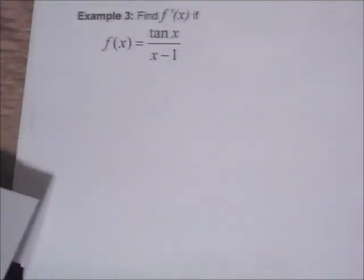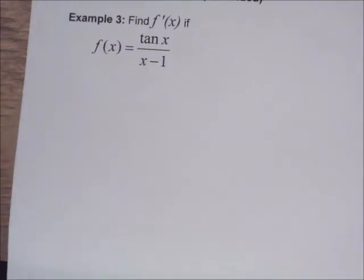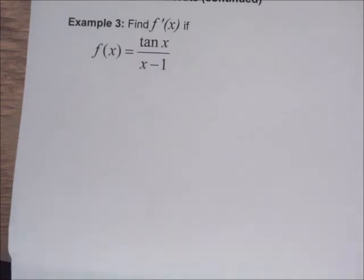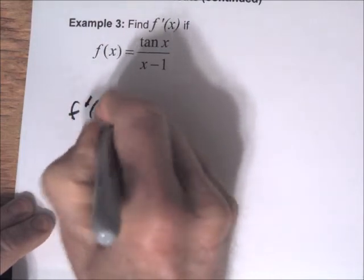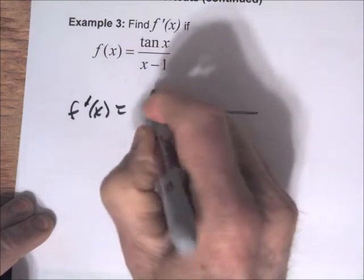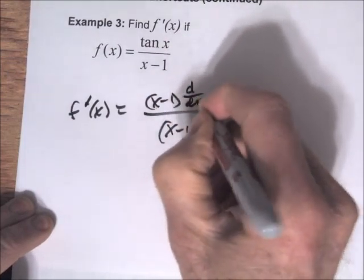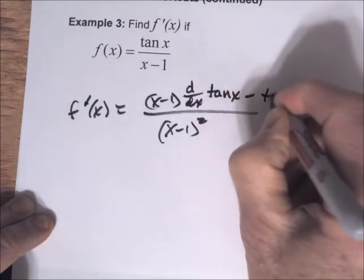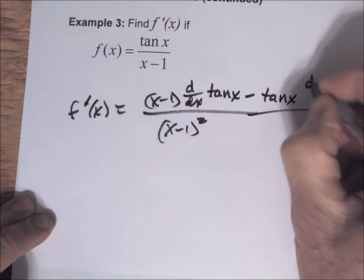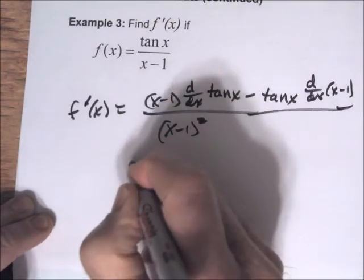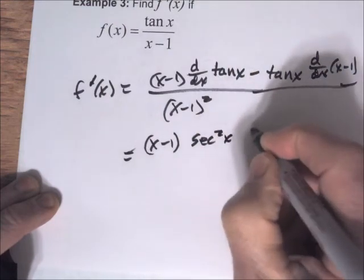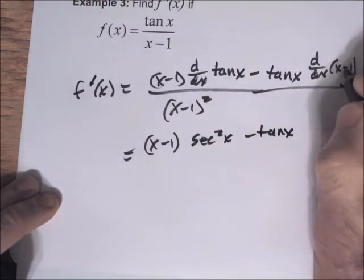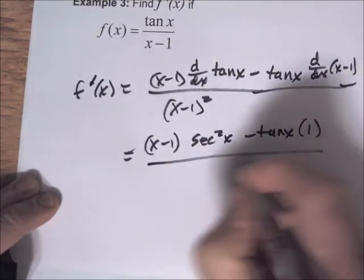Here's another example: the derivative of tan x/(x − 1). We use the quotient rule: f′(x) = [denominator times derivative of numerator minus numerator times derivative of denominator] over denominator squared. The derivative of tan x is sec²x, and the derivative of (x − 1) is 1. So we get [(x−1)·sec²x − tan x · 1] / (x−1)².